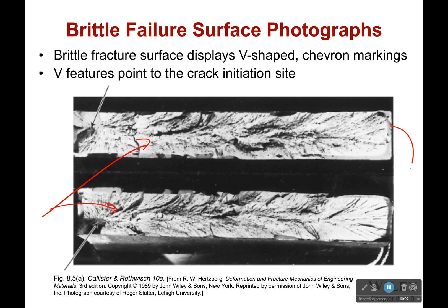They could be joined together if we just kind of squish them back together and put some glue on them. Now, what you might be able to see here, if you're looking at it, is you'll see that there's these V-shaped chevron markings.